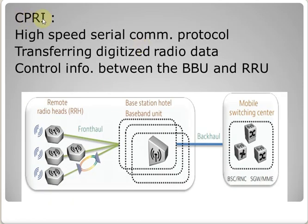Here we have CPRI, and we have the fronthaul and backhaul. Fronthaul is the link between the BBU and RRH, and backhaul is the link between the BBU and the core. CPRI stands for Common Public Radio Interface. It is the specification that defines the communication protocol running over the dedicated fiber link.